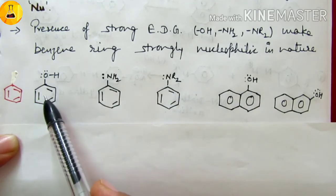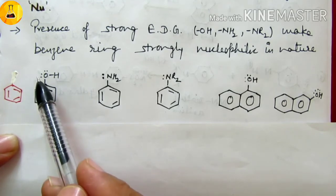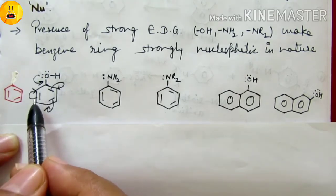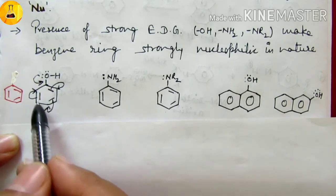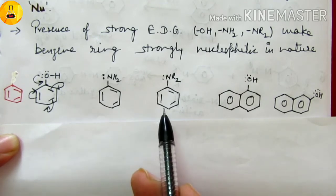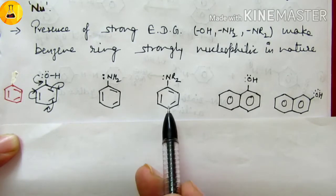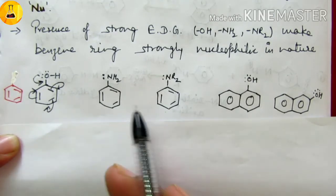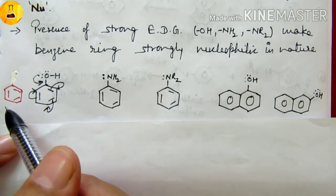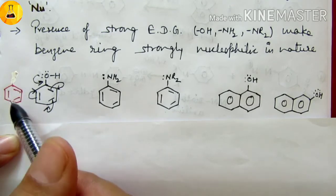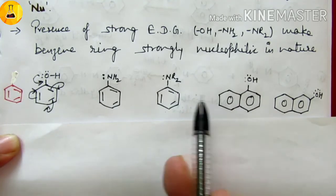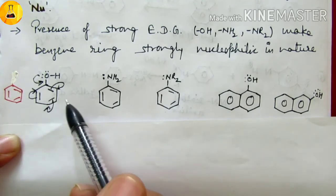These groups are part of conjugation of the ring. When we see that electron density on benzene increases due to conjugation with these groups, the benzene becomes nucleophilic in nature, and I can carry out diazo coupling. In plain benzene, the electron density is not sufficient for diazonium coupling, but in all these derivatives it happens easily and very fast because they are more electron-rich.